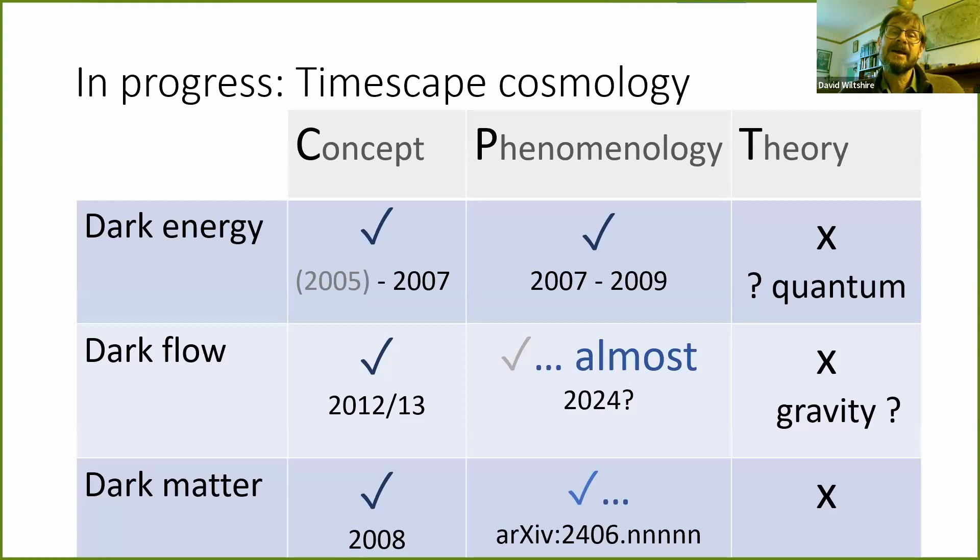Any theory actually involves a complex layering of concepts, phenomenology, and mathematical equations. One informs the other. With better mathematics, you can refine your concept, and you can do some more phenomenology, and it goes round and round in various layers. And in order to do physics, you actually need to have predictions, you need to do phenomenology, or nobody's going to take you seriously, you're just going to be a philosopher.